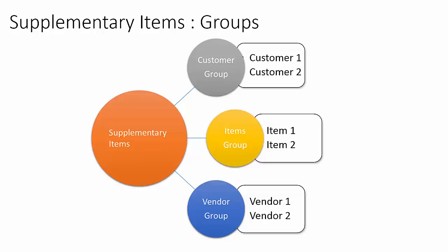There are three types of groups: supplementary customer item groups, supplementary item groups, and supplementary vendor item groups. When we want to offer the same supplementary product to multiple customers, we can create a customer group and link it to multiple customers. Similarly, when we want to offer the same supplementary product to multiple items, we create item groups and link them to multiple products. Having a group helps set up supplementary products more effectively.